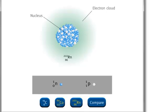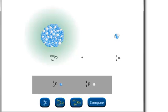A radon-222 nucleus contains 86 protons and 136 neutrons. During alpha particle emission, a particle composed of two protons and two neutrons is emitted.